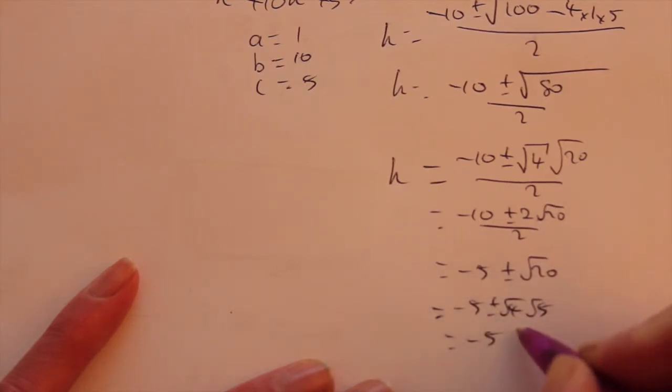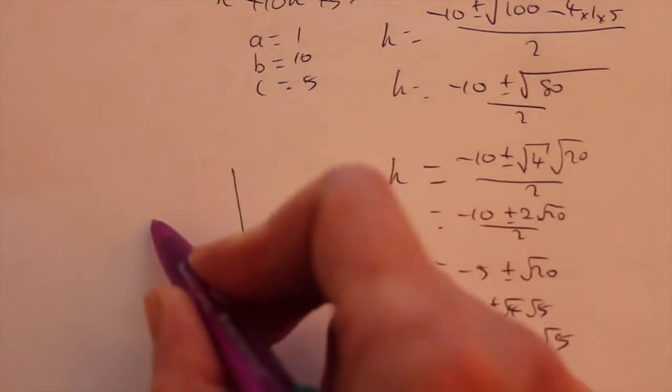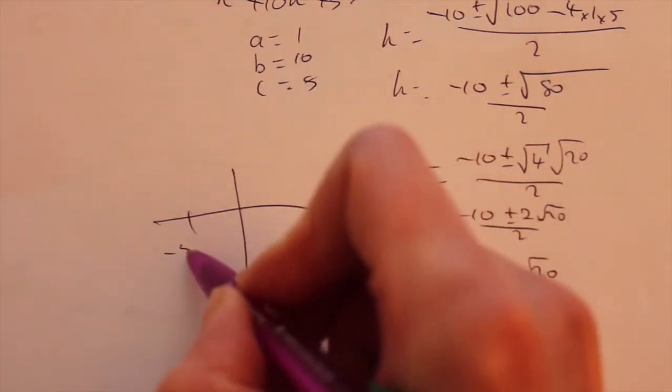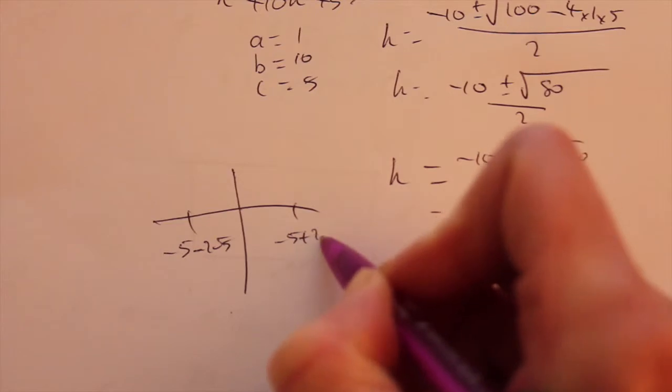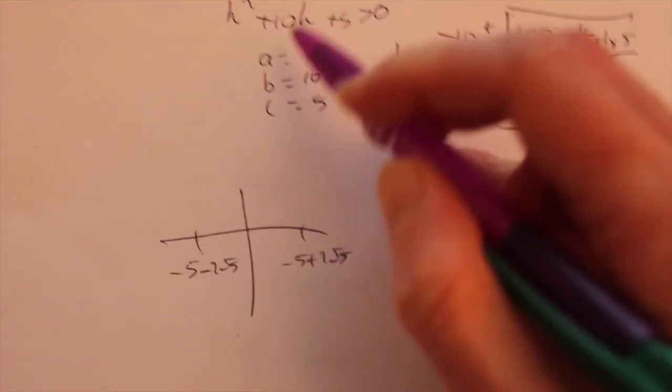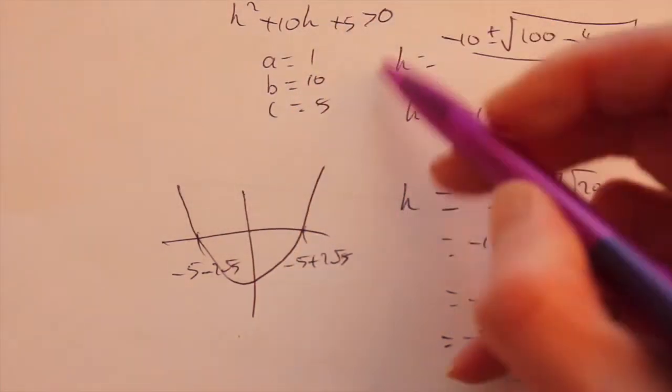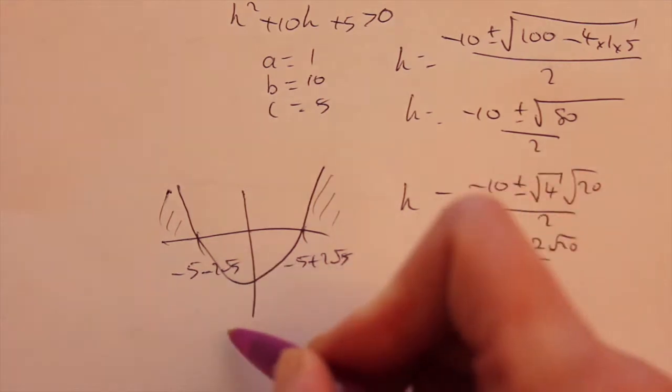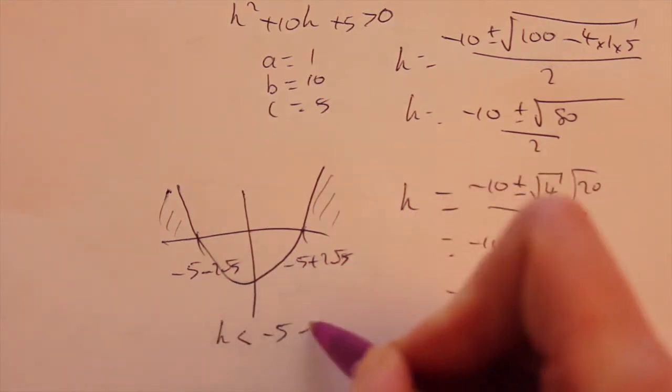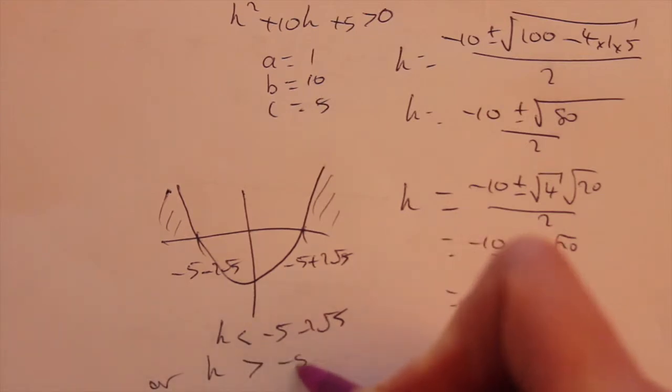Giving you minus 5 plus or minus 2 root 5. Those are your critical values. So when you're drawing out your graph, you have minus 5 minus 2 root 5 and minus 5 plus 2 root 5. It's a positive k squared, so it's a u-shaped graph. You want where the graph is above 0, here and here. So your answers are k less than minus 5 minus 2 root 5 or k greater than minus 5 add 2 root 5.